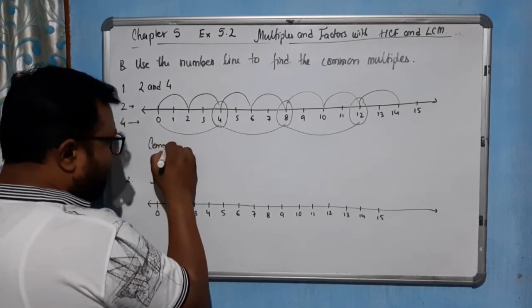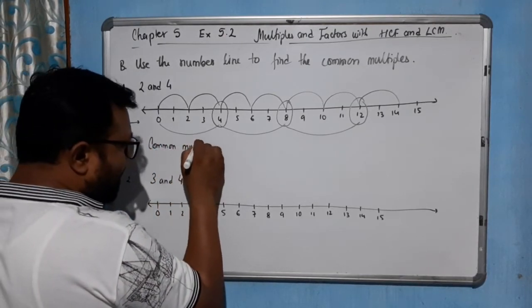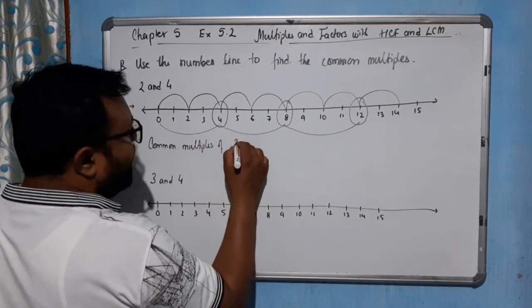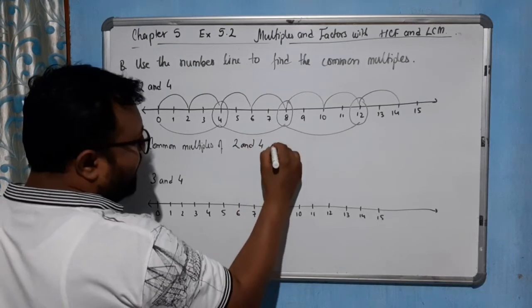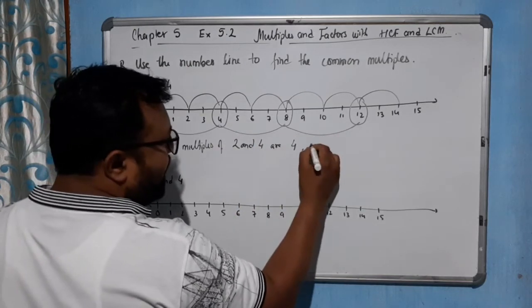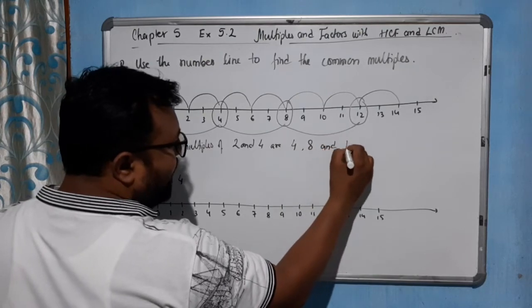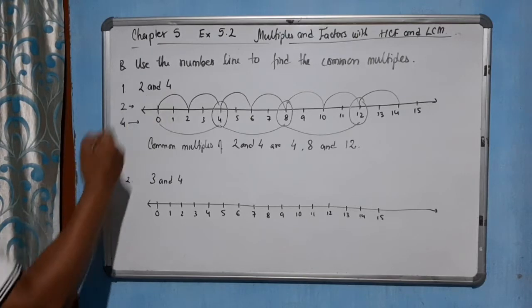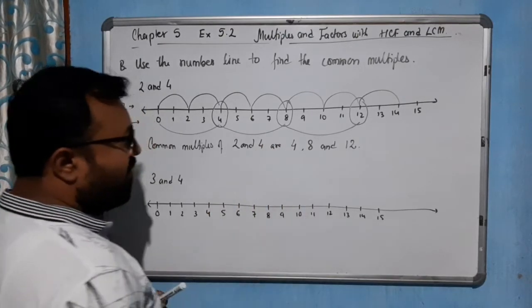So we can clearly write here, common multiples of 2 and 4 are, first one is 4, then 8 and 12. So in this case, for 2 and 4, we are having 4, 8 and 12.